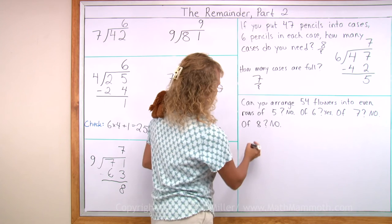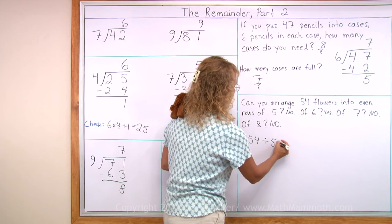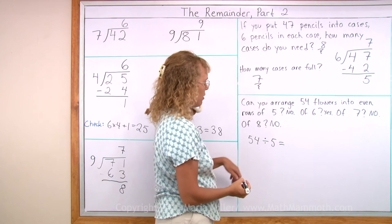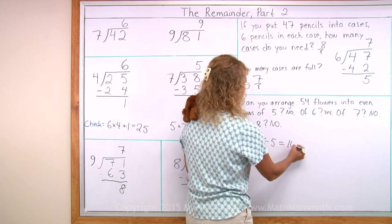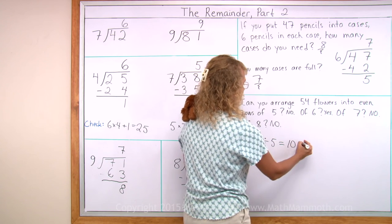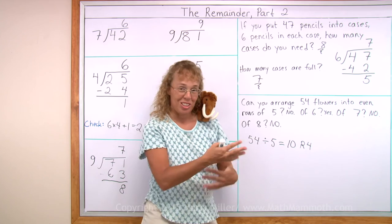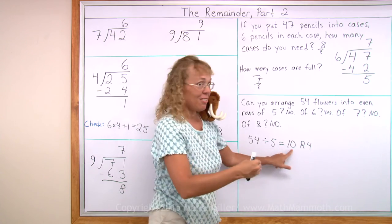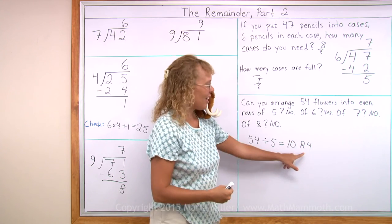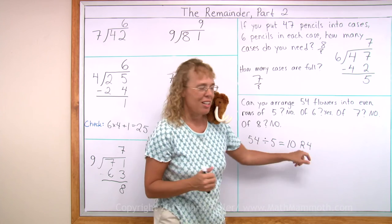But let me now write the divisions. 54 divided by 5. It is not an even division. 5 goes into 54 10 times. 10 times 5 is 50, so the remainder is 4. What does it mean as far as arranging flowers? I would have rows of 5, 10 rows, right? And then in the last row, only 4 flowers. These are the leftover, the remainder flowers.